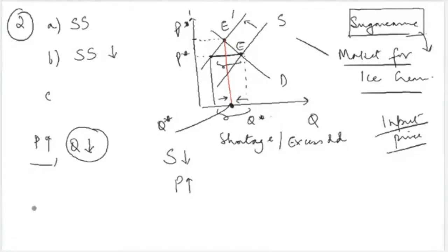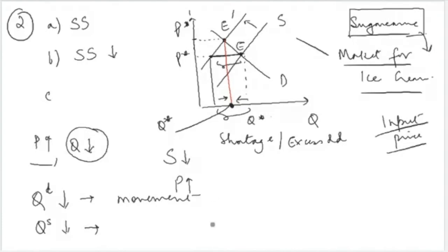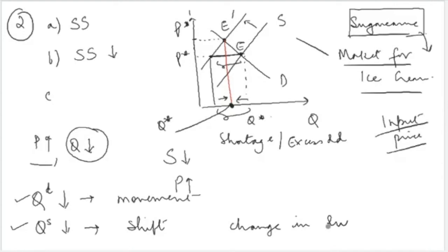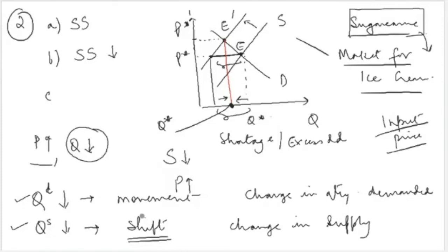Comparing the old and new equilibrium, both quantity demanded and quantity supplied are falling. However, quantity demanded is falling because of movement along the demand curve, whereas quantity supplied is falling because of the shift in the supply curve. So there is a change in quantity demanded (movement along the demand curve) and a change in supply (shift in the supply curve). These two concepts must be understood very clearly.